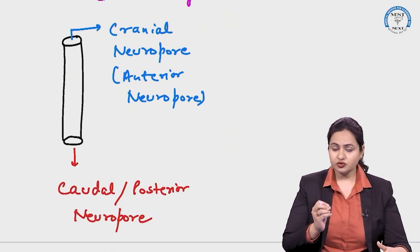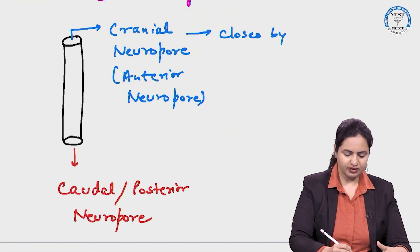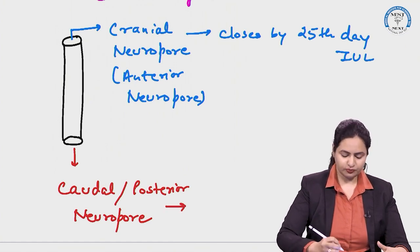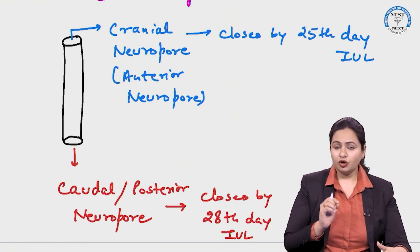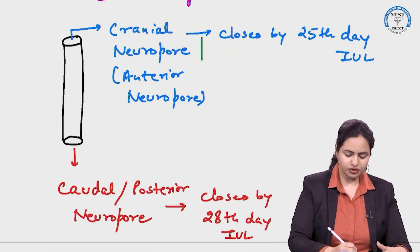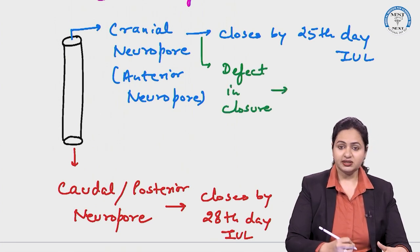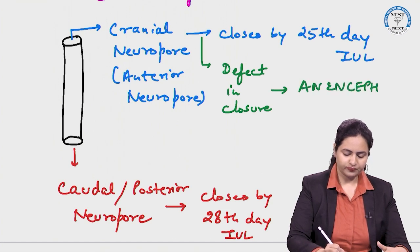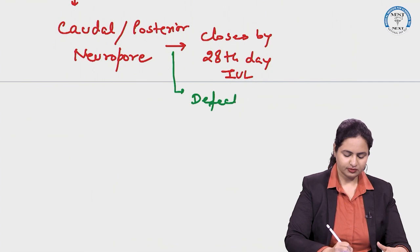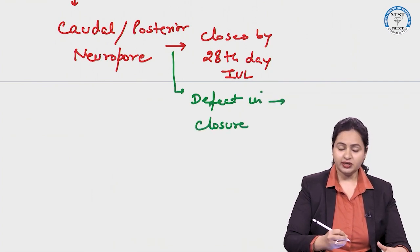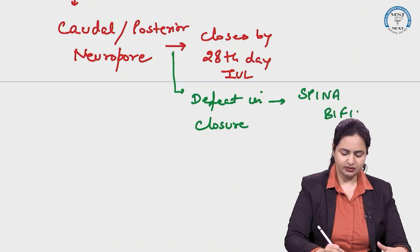The cranial neuropore closes by the 25th day of intrauterine life, and the caudal neuropore closes by the 28th day. If these closures do not occur normally — a defect in closure of the cranial neuropore leads to anencephaly, and a defect in closure of the caudal neuropore leads to spina bifida.